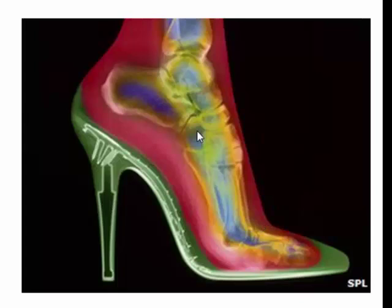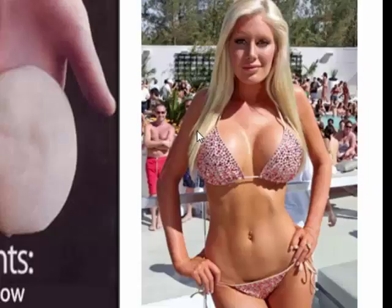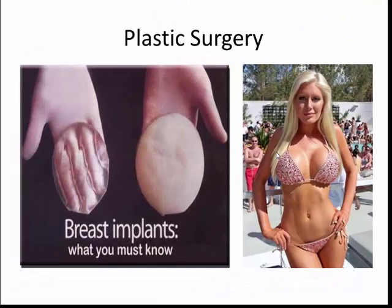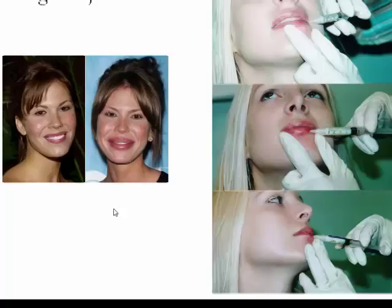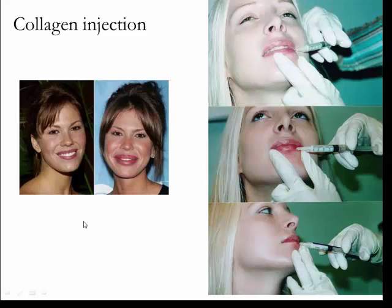I have to admit, one of the things that attracted me to my wife when I first met her is she was wearing comfortable tennis shoes, and I thought, there's a sensible person. What about plastic surgery? The exaggeration or reduction of body parts with surgery is an extremely big business. If you just look at comparing 1997 and 2008, look at the difference in numbers in breast augmentation, liposuction, rhinoplasty — nose jobs — and the injection of collagen to expand the lips.